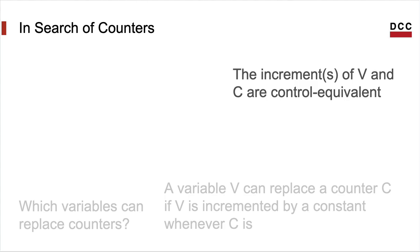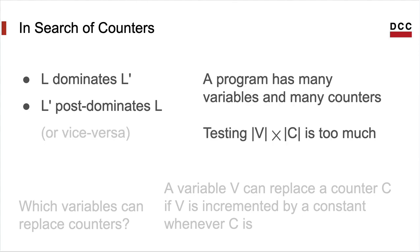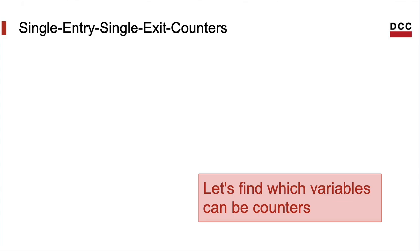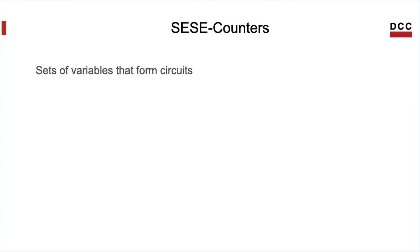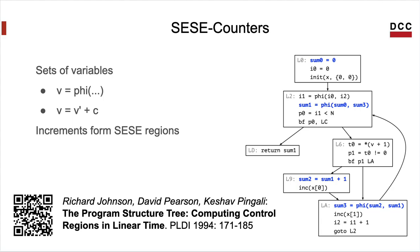The important question is: which variables can replace counters? A variable can replace a counter if it is incremented by some constant whenever the counter is incremented — all increments on the variable must be control equivalent to the increment of the counter. Two program sites are control equivalent if the first dominates the second and the second dominates the first. We focus on program variables whose increments are all control equivalent to each other. We call these CIS counters — single-entry-single-exit counters. CIS counters are sets of variables whose dependencies form circuits in the dependence graph of the program, with the notion of CIS region coming from earlier work by Johnson from 1994.